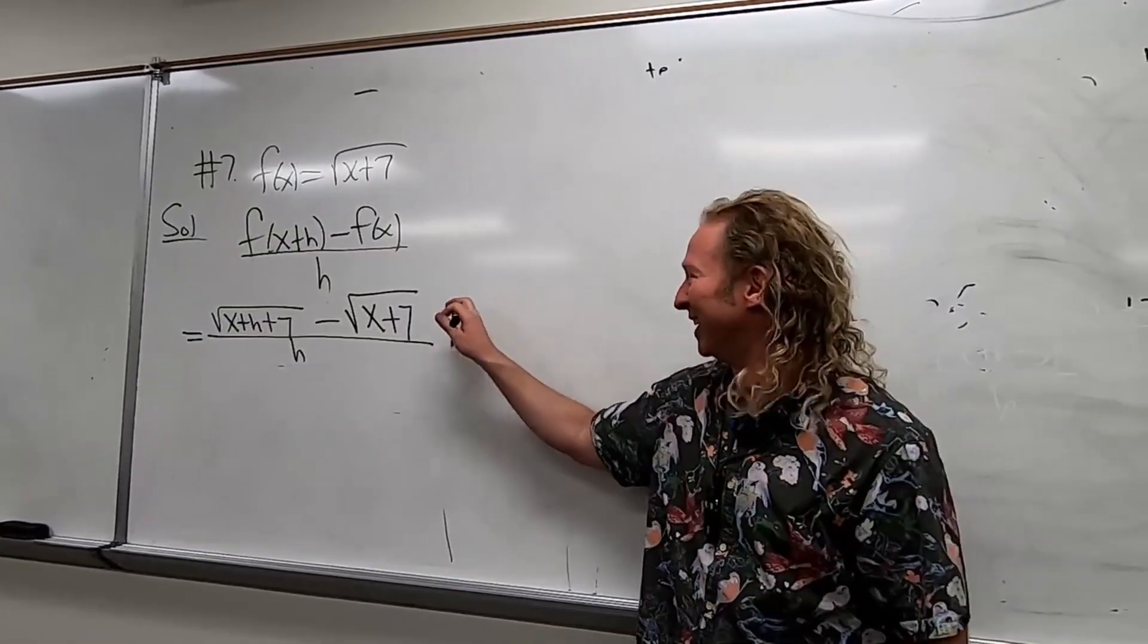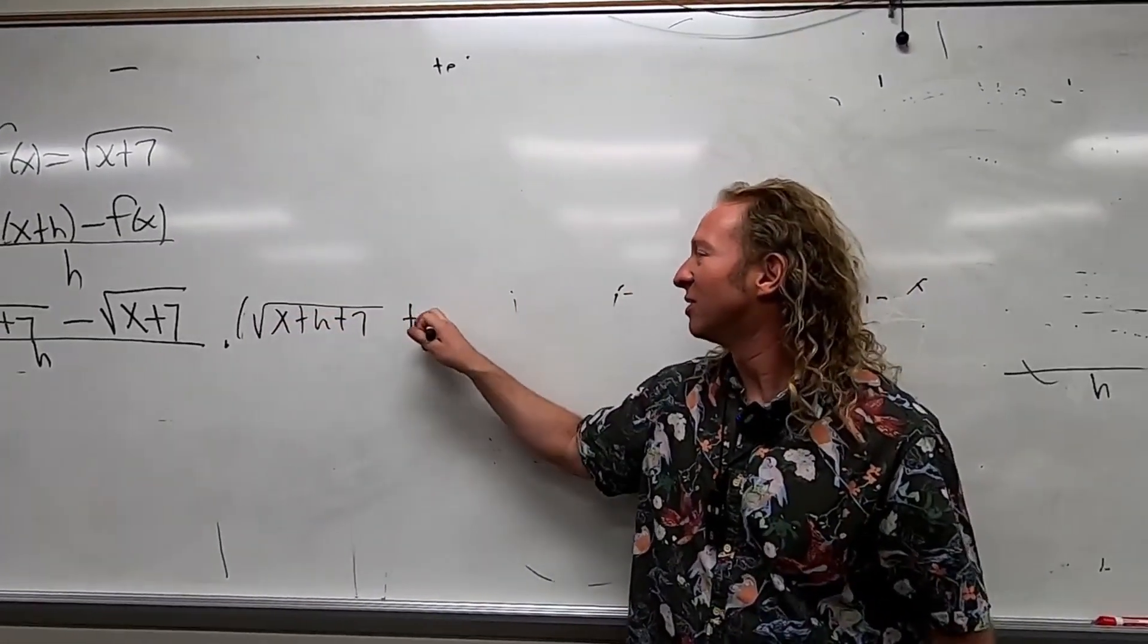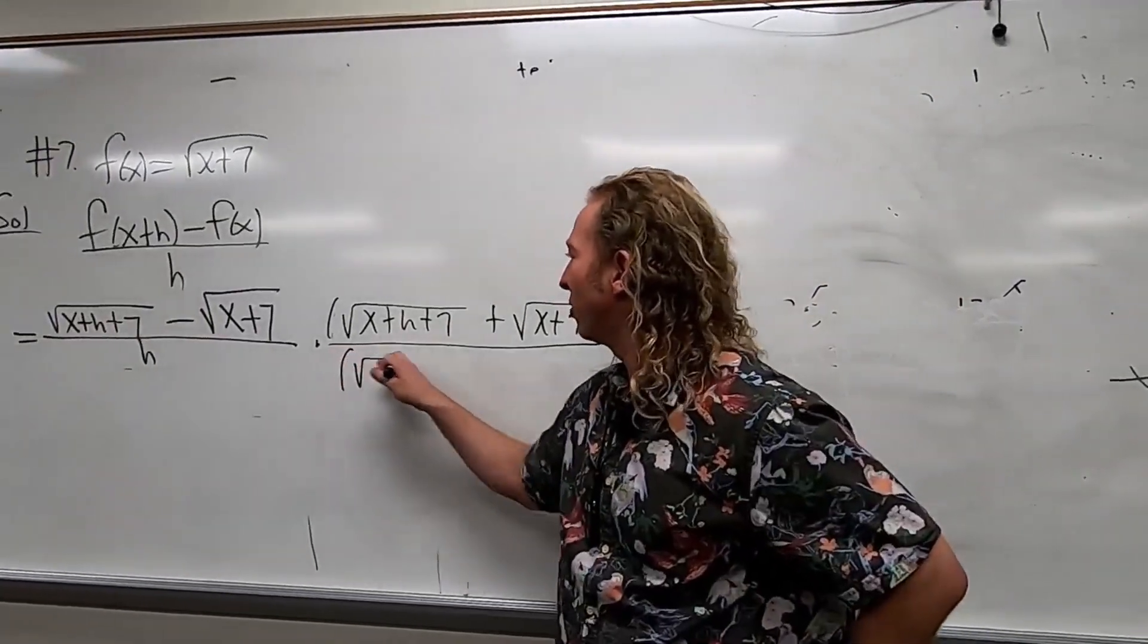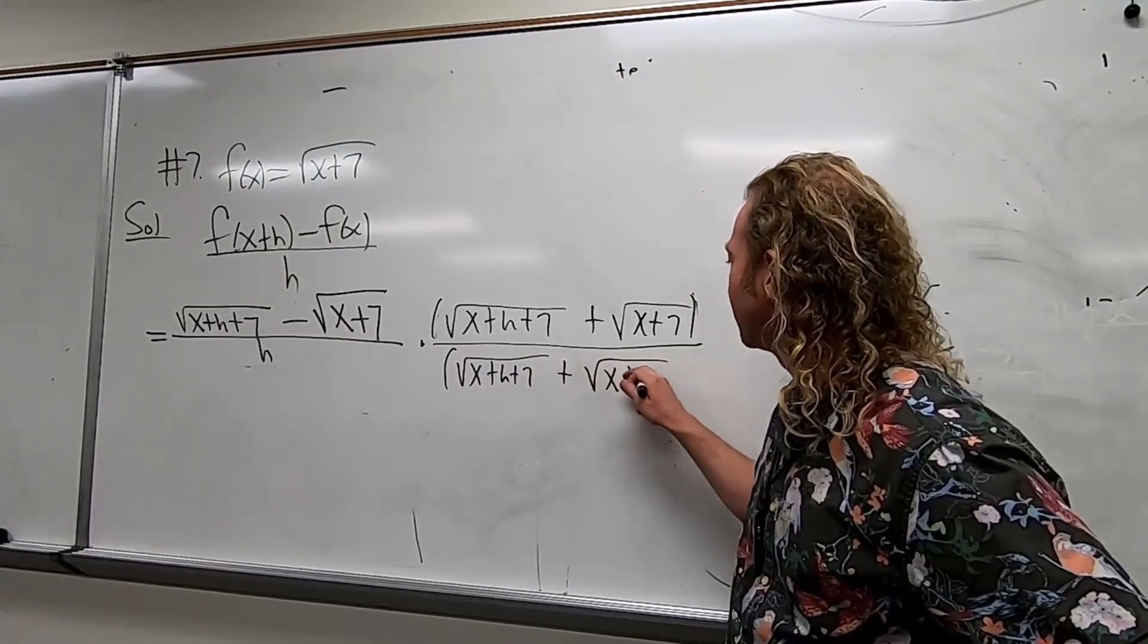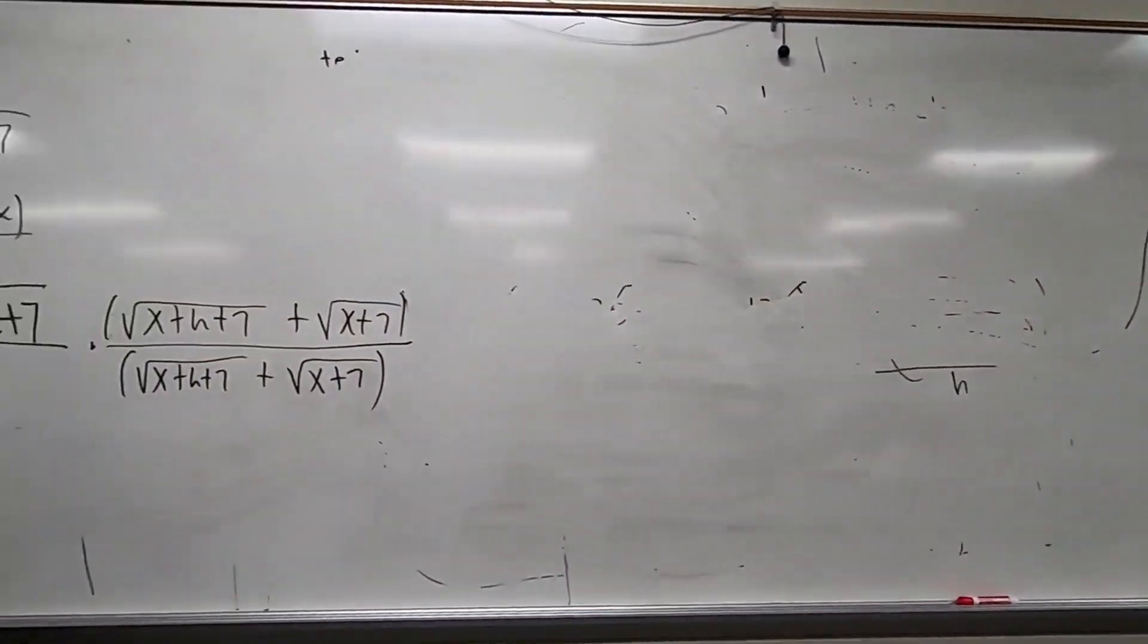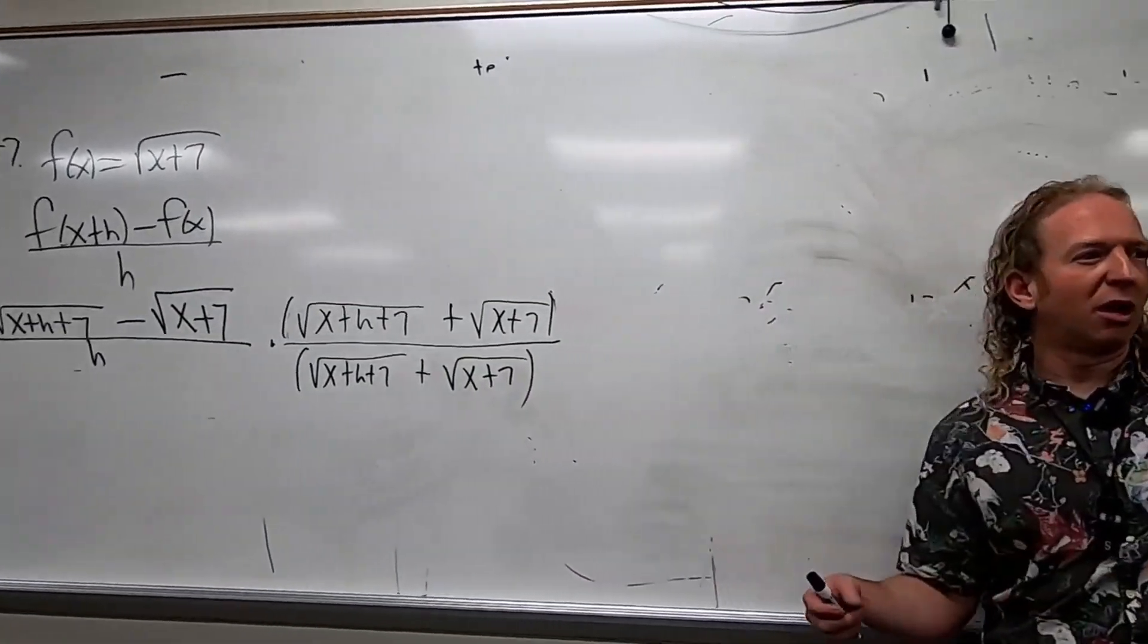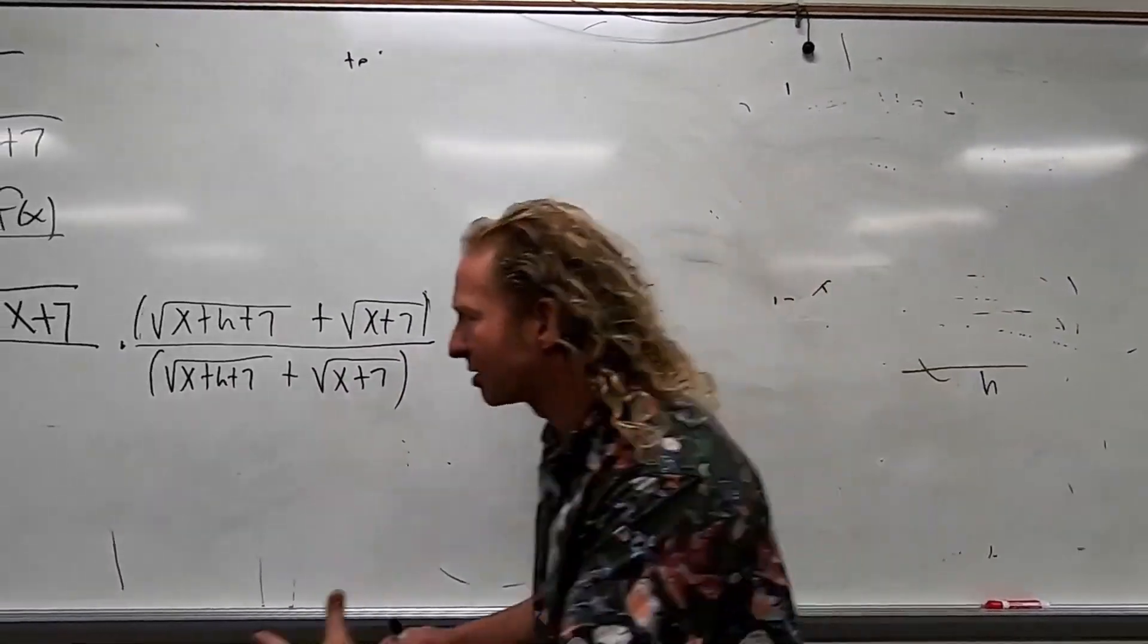So multiply by the conjugate: square root of x plus h plus 7 plus square root of x plus 7, over the same thing. You're basically multiplying by 1 in a clever way. This is a very important technique. We did this earlier when taking limits. I think it was section 1.3. This might come up multiple times on the exam—find limits by rationalizing. This is like two test questions.